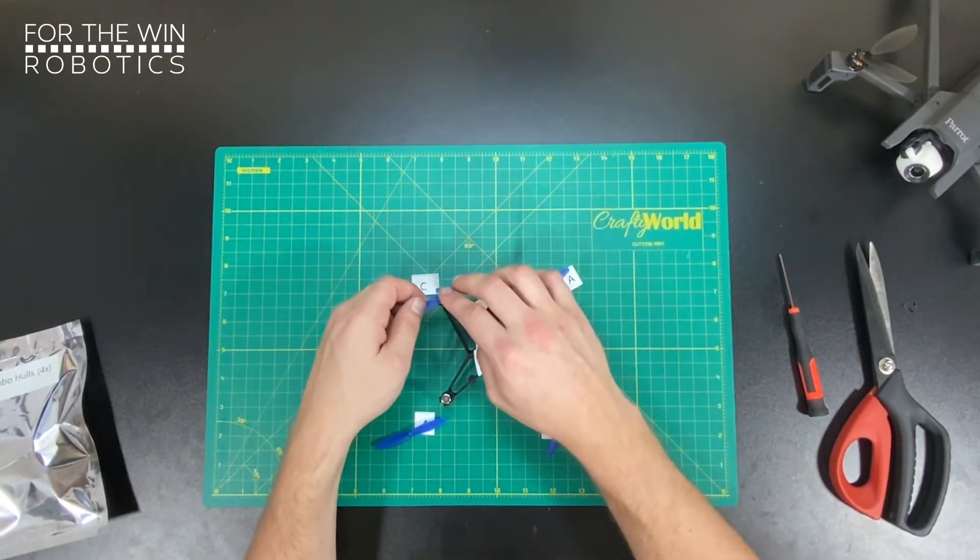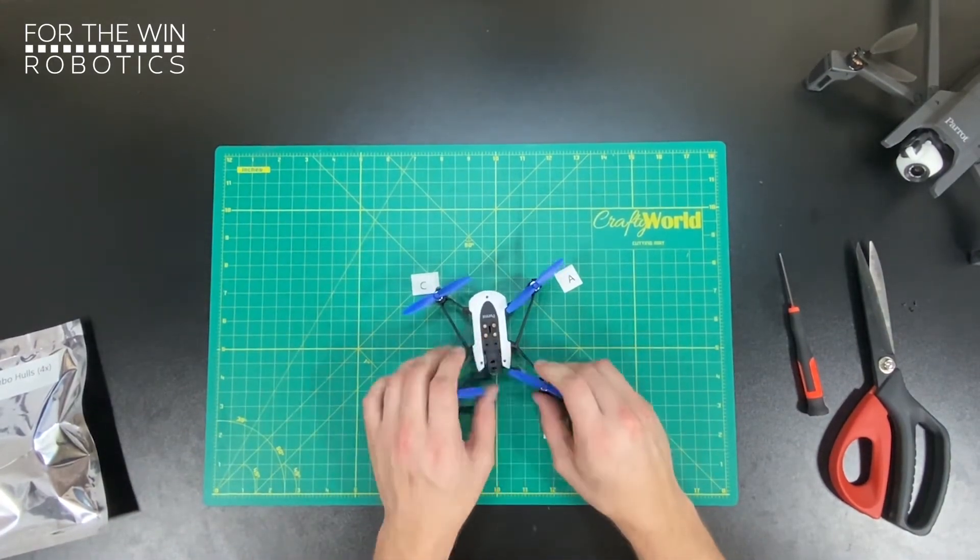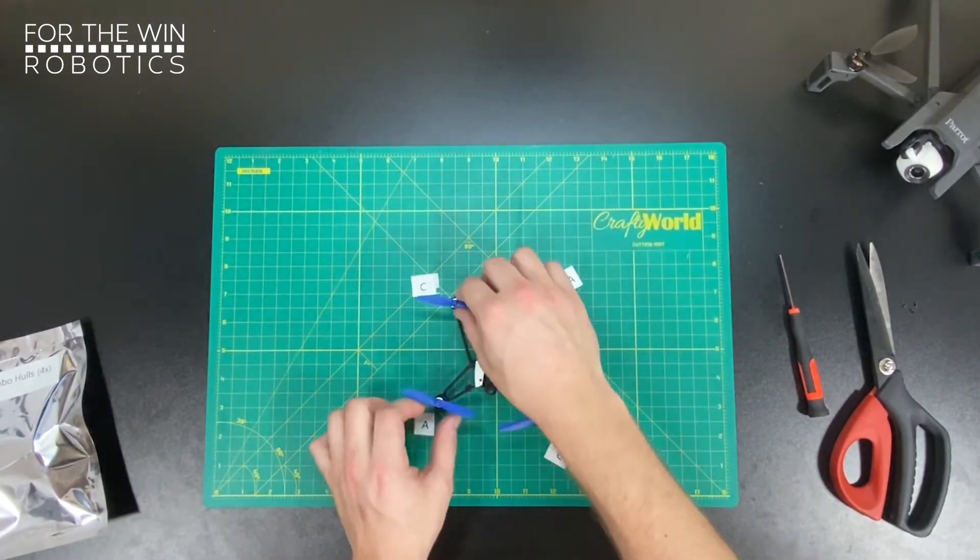So repeat the process for all four propellers. And they all should spin freely.